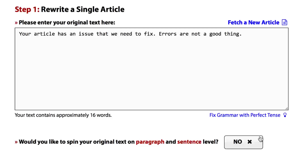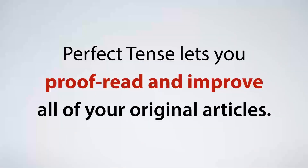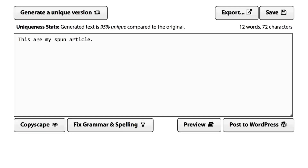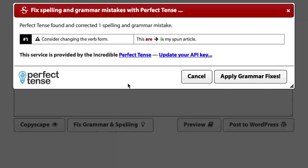Our integration with Perfect Tense is insanely powerful because it lets you proofread and improve all of your original articles before you even spin them with SpinRewriter. Which means all of your spun articles will be even better because the original articles will be better. And not just that — even when you're done spinning an article with SpinRewriter, you can use Perfect Tense to improve every single one of your spins individually,